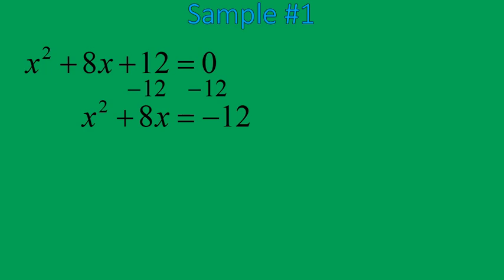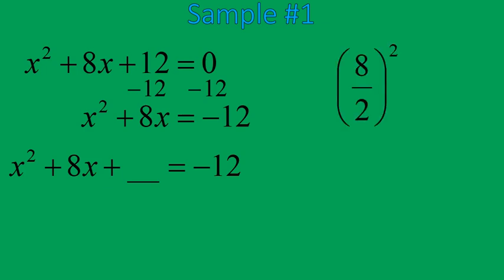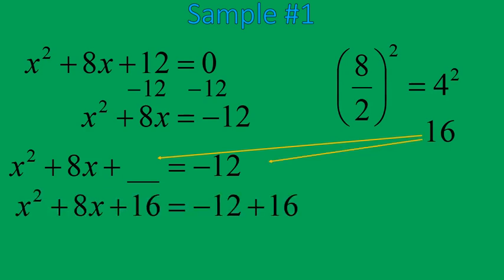What you're looking for with completing the square is that we are going to make a perfect square quadratic equation on the left side of the equal sign. To do that, we need to add a number on the left side. To determine the number that you are going to add, you take the number from the term 8x, so you take the number 8, divide that by 2 and square it. 8 divided by 2 is 4, and 4 squared is 16.